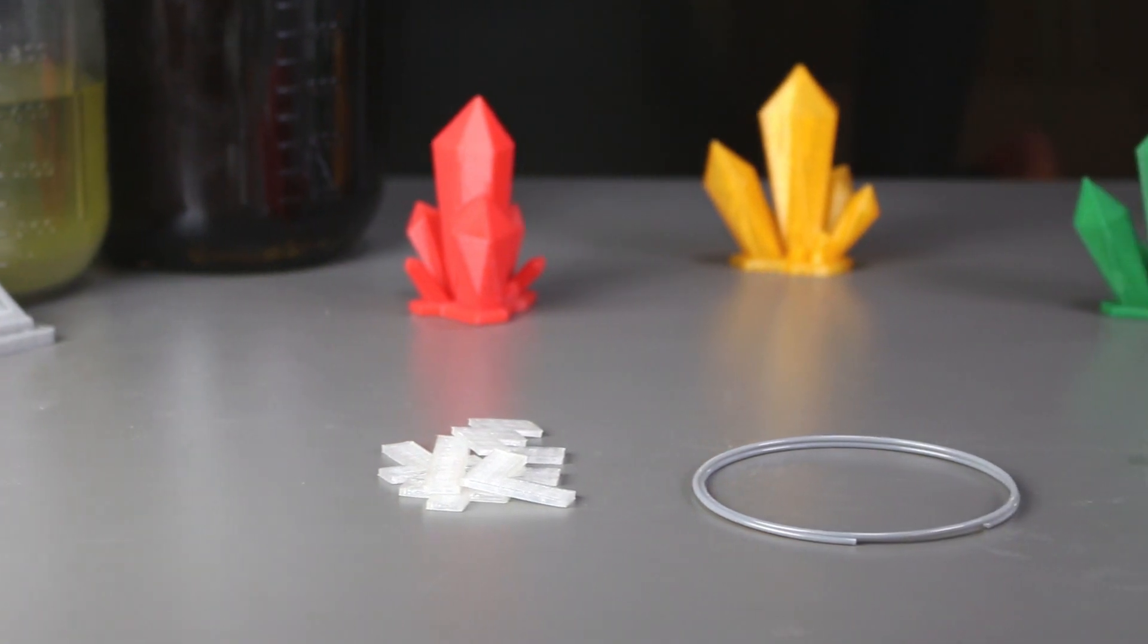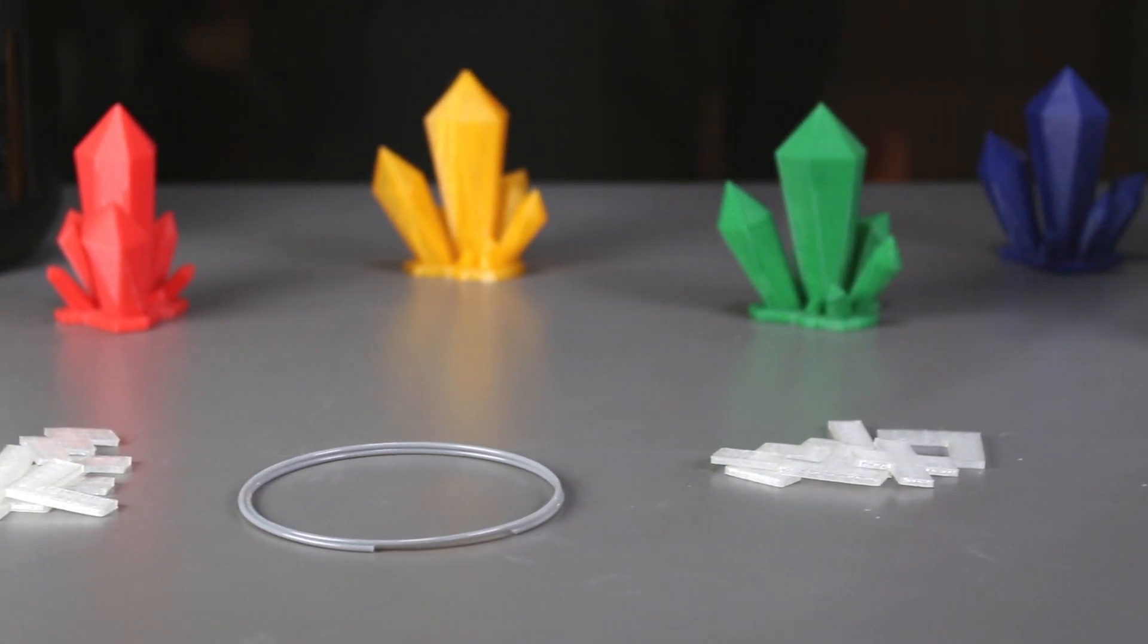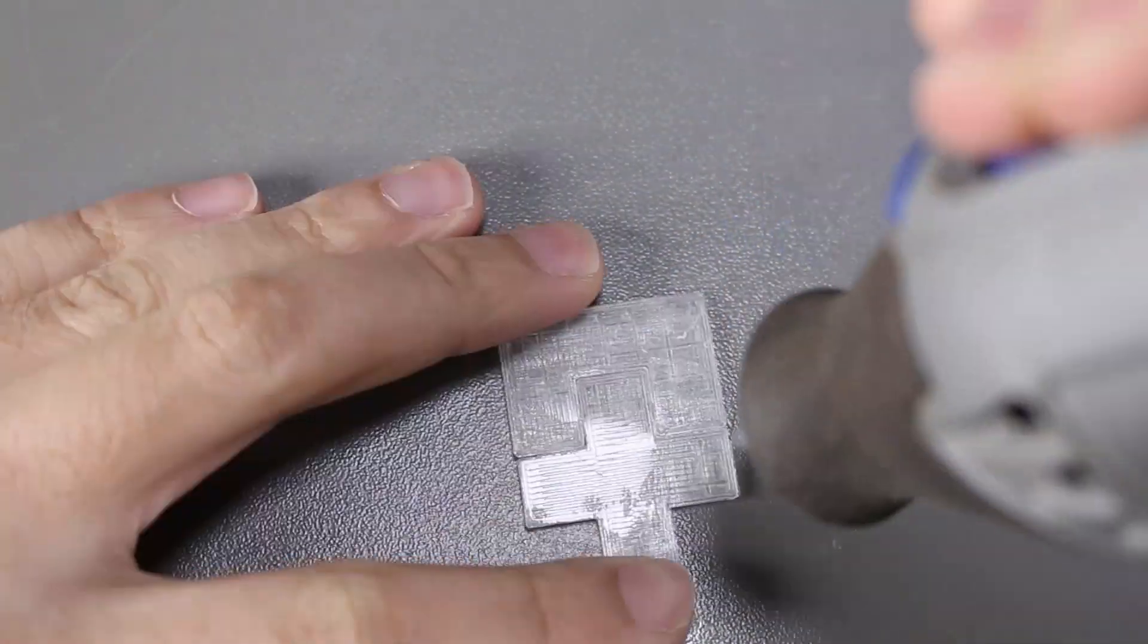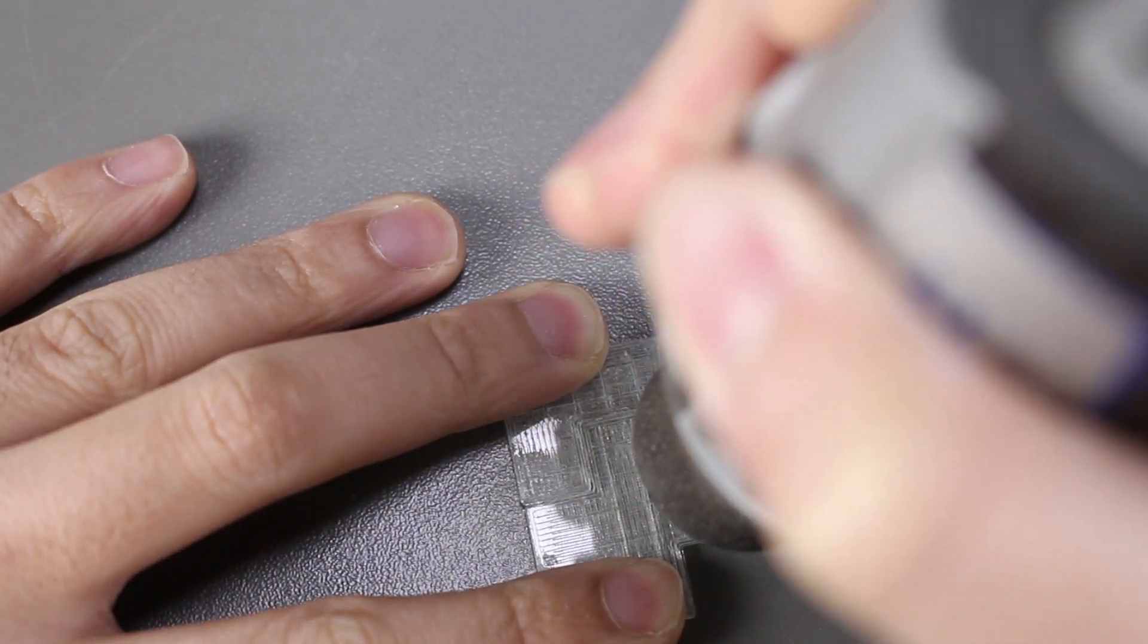I'll weld the parts on the left together with PLA and then we'll use superglue for the parts on the right and then we'll compare them. I'll start welding the parts together with some grey filament. I'll have the speed at 10.